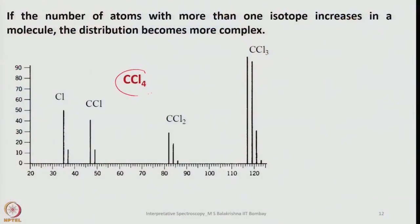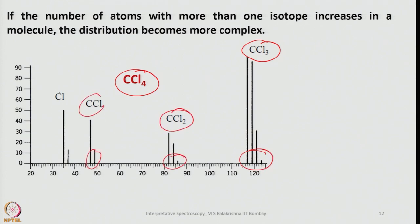If the number of atoms with more than one isotope increases in a molecule, the distribution becomes more complex and harder to interpret. For example, CCl₄: considering ³⁵Cl, ³⁷Cl, ¹²C, and ¹³C, CCl₃ shows a characteristic pattern, CCl₂ shows another, CCl shows a doublet, and Cl shows a doublet as well.